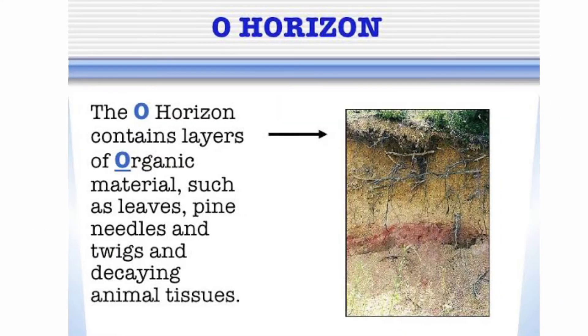O-Horizon: It is the top organic layer of the soil, made mostly of leaf litter and partially decomposed organic matter.